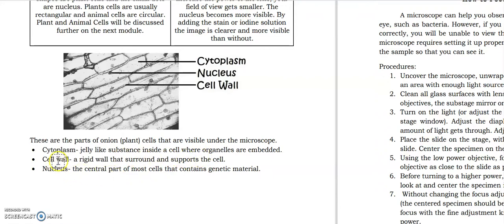So these are the parts of the onion plant cells that are visible under the microscope. We have the cytoplasm, which is the jelly-like substance inside a cell where organelles are embedded. Anyway, we're going to study about cytoplasm, different parts of the cell, plant cells, animal cells, in the upcoming module. Then we have also the cell wall, which is the rigid wall that's around and supports the cell.